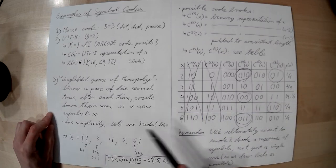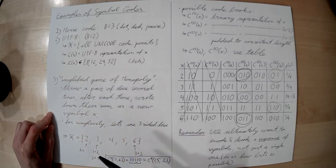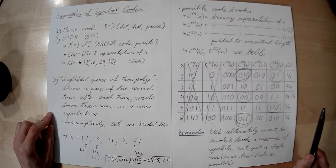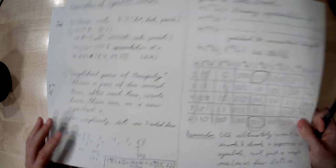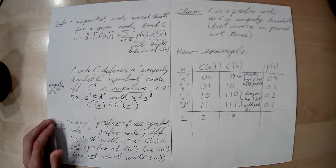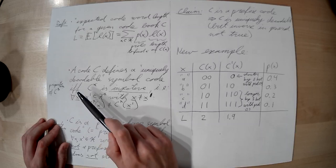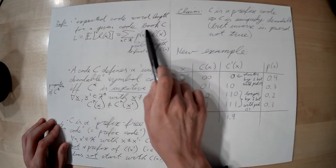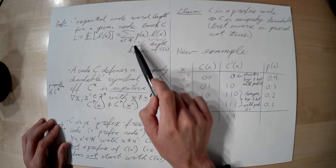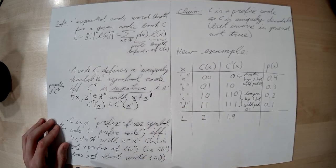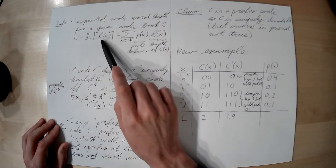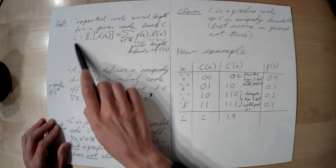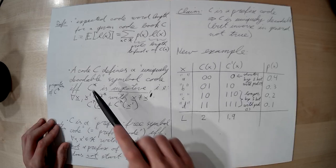We gave examples for our favorite game of simplified Monopoly, where different codebooks had different properties. In order to compare these in the tutorial, we defined three properties of codebooks. One is the expected codeword length: if you have a probabilistic model of your source — more precisely a model of the probability with which a symbol will occur — then you can calculate the expected length of the codeword for that symbol. Generally we want the expected codeword length to be short because we want to be efficient.